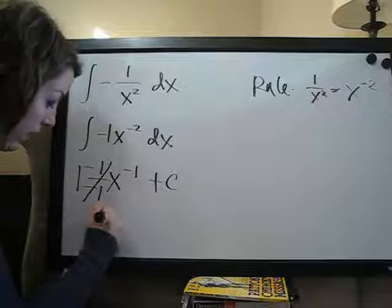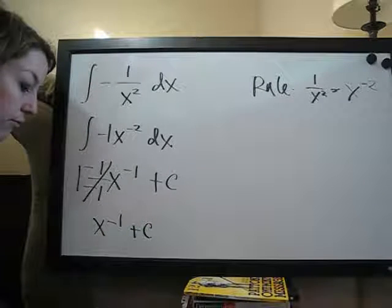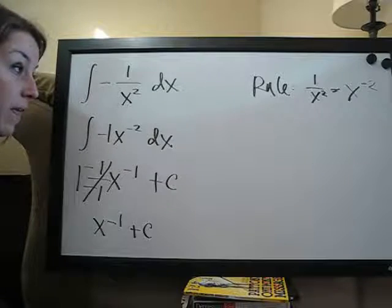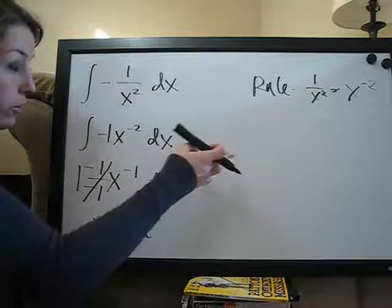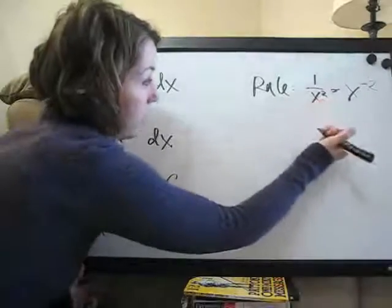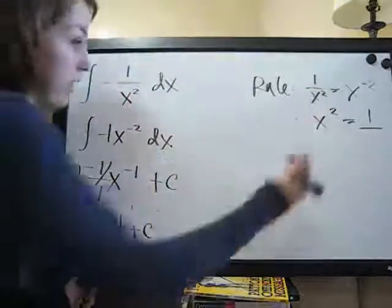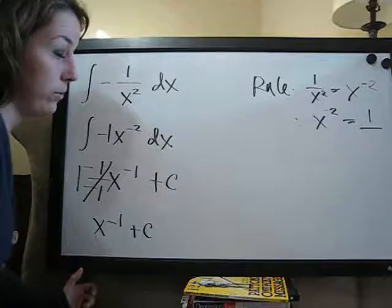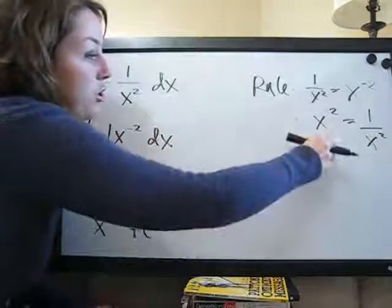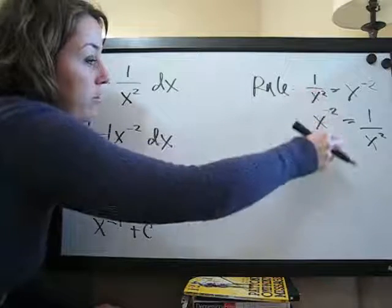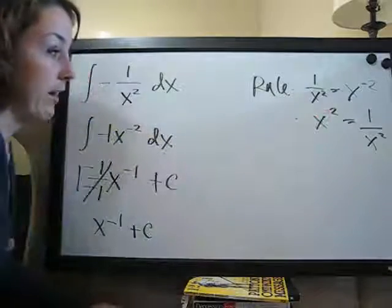And you just have x to the negative 1. So, you could write x to the negative 1 plus c. Of course, x to the negative 1 is not the prettiest way to finish a problem either. And if we apply our rule over here, we've got a negative exponent on top. We can also reverse that rule and move this to the bottom. So, for example, let's make another rule. If you have x to the negative 2, if this is your original function, you can change that to be 1 over x squared. To move something from the top to the bottom or from the bottom to the top, you just change the positive or negative sign on the exponent.